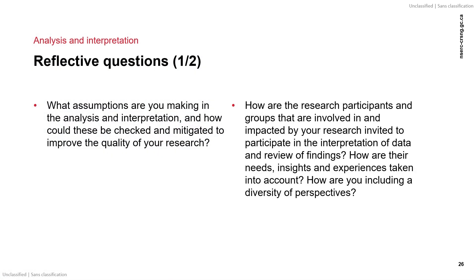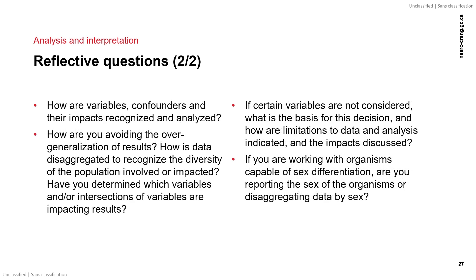When you are analyzing and interpreting data, here are some questions to consider. What assumptions are you making in the analysis and interpretation, and how could these be checked and mitigated to improve the quality of your research? How are the research participants and groups involved in and impacted by your research invited to participate in the interpretation of data and review of findings? How are their needs, insights, and experiences taken into account? How are you including a diversity of perspectives? How are variables, confounders, and their impacts recognized and analyzed? How are you avoiding the overgeneralization of results? How is data disaggregated to recognize the diversity of the population involved or impacted? Have you determined which variables and or intersections of variables are impacting results?